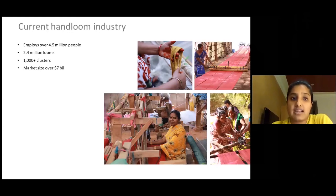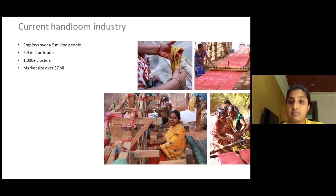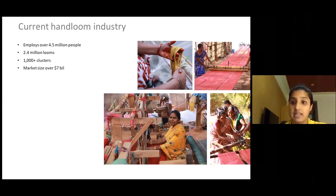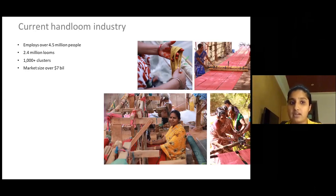The current handloom industry employs about 4.5 million people, both directly and indirectly — including dyers, spinners, and anyone associated with cloth making. It is the second largest employer after agriculture in India. There are about 2.4 million documented looms in the country — pit looms, frame looms, jacquard looms, and sample looms — with an estimated 20-25% more undocumented. Most looms are at home, as weaving is essentially a family enterprise.